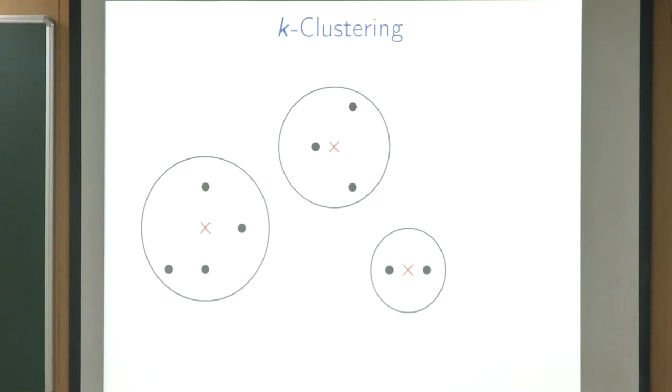The cost of this clustering is: for each cluster, the cost is the sum of distances from every point to its cluster center. We sum distances from each point to the center, and these numbers give the cluster cost. The whole cost is the sum of costs of each cluster.